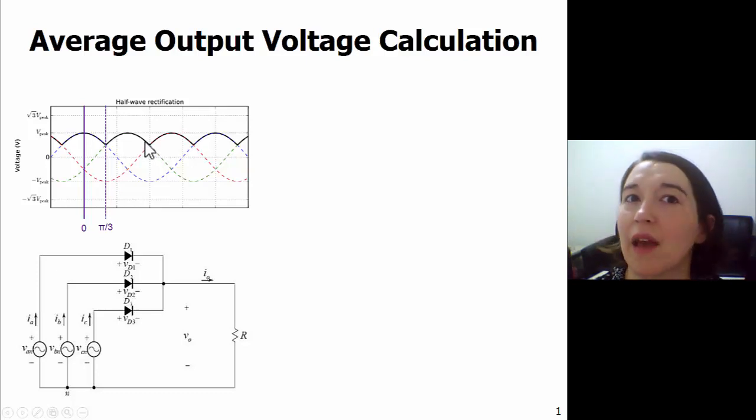We need to calculate the average output voltage, and to do that we will identify the repeating parts so that we don't have to integrate over the whole period but just a small section.